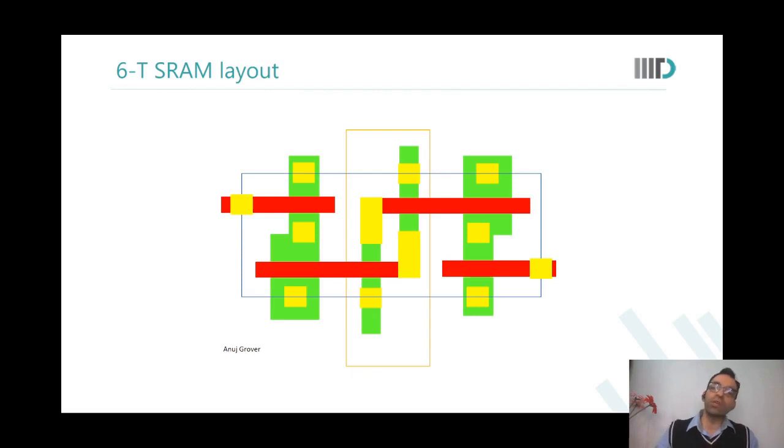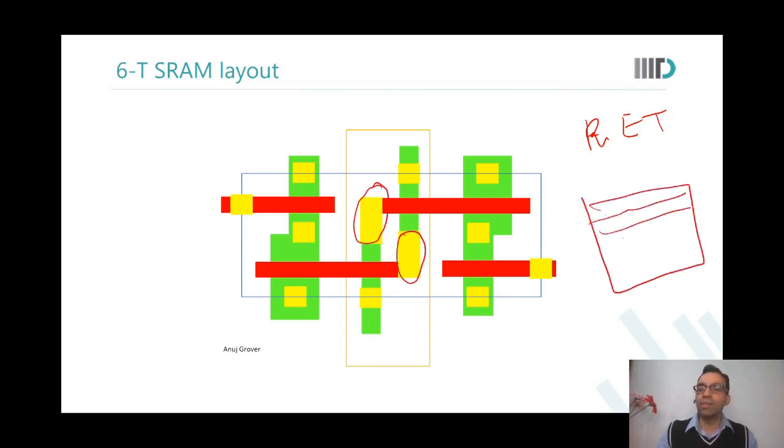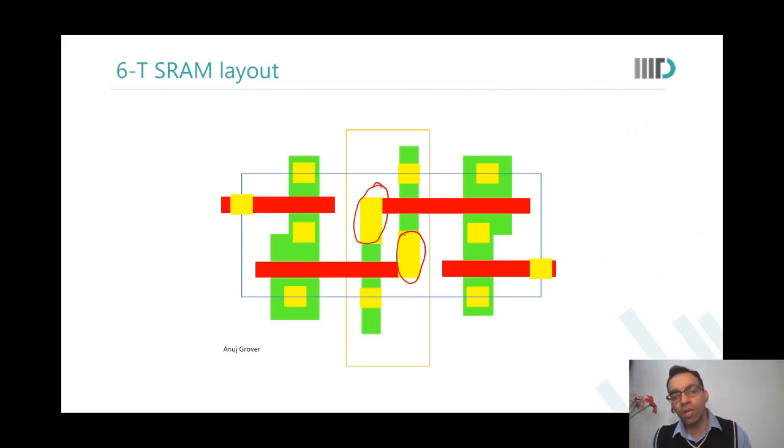So by playing with what is called as resolution enhancement techniques, we allow long contacts only inside the SRAM cell, because we know that this is going to be available in this array only and nowhere else. And in this array also, there is a pattern, a fixed pattern in which they will be there. So I have a clear diffraction pattern for which I have to optimize my mask making process. And therefore, it is only allowed in the memory cell and nowhere else.